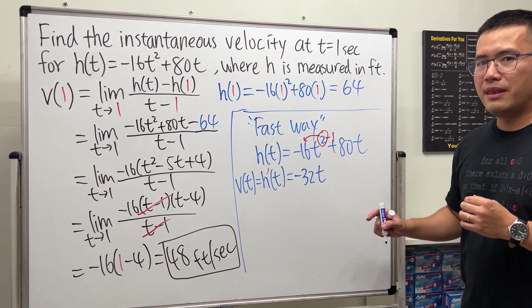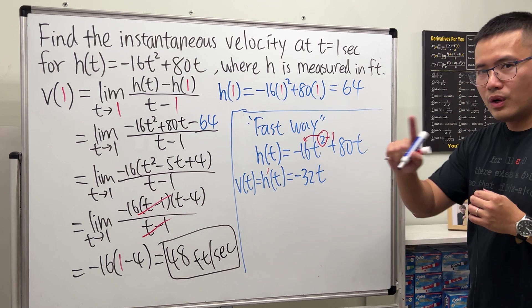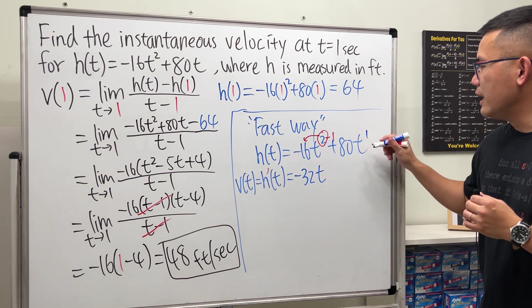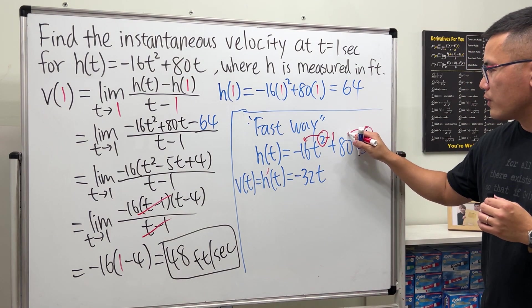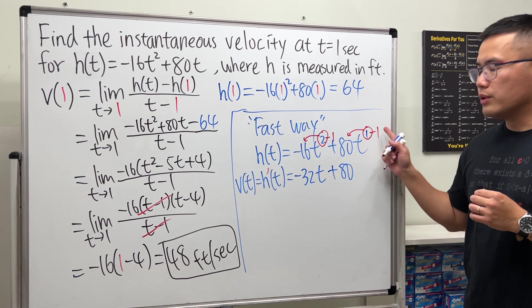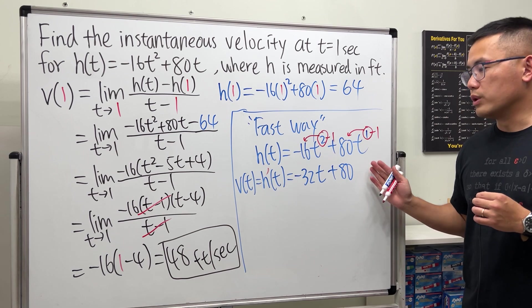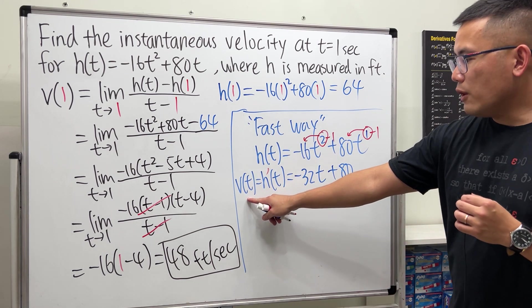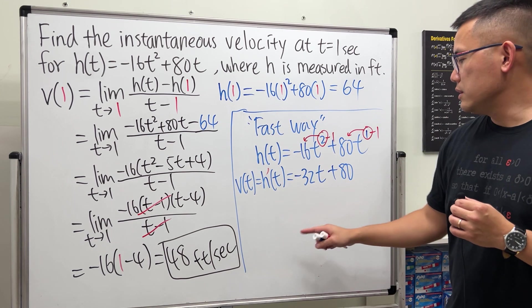Right here, we can do the same thing. This is t to the what power? 1. So t to the first power. And then go ahead, bring the 1 to the front, and then minus 1. 1 times 80 is just 80. t to the 0th power is just 1. So no more t. So v of t, the velocity function, is just this.